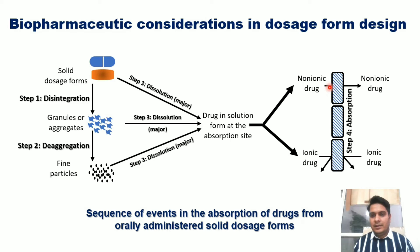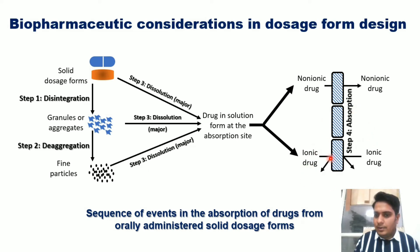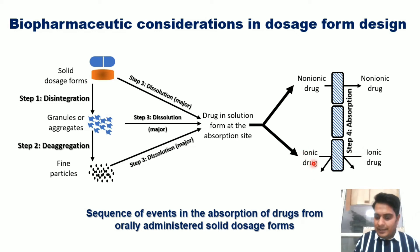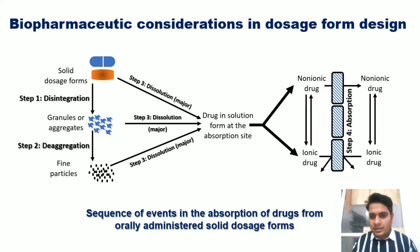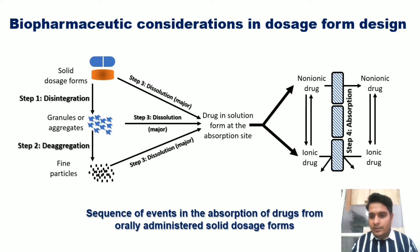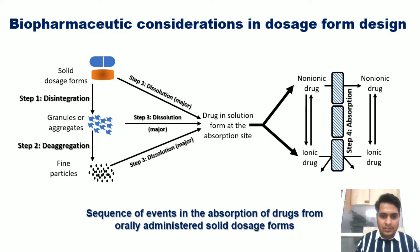If the drug is in ionic form, it will not be absorbed easily. The conversion of non-ionic form to ionic form is a reversible process, so the drug must be converted into non-ionic form before transportation into the systemic circulation. In blood, the drug gets converted between ionic and non-ionic forms accordingly. These are the different sequence of events that occur during the absorption process.